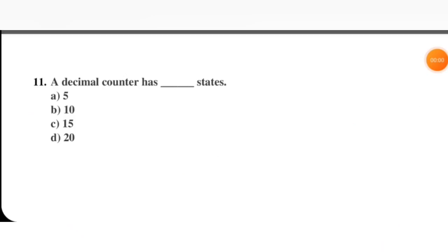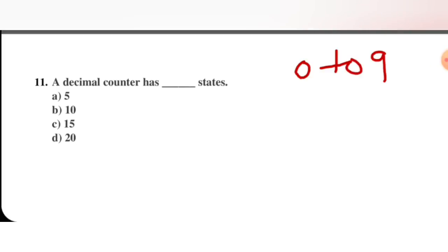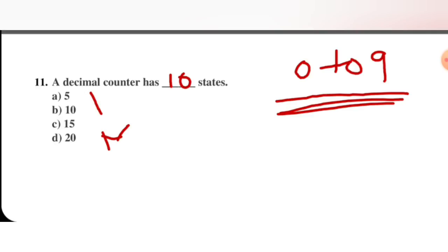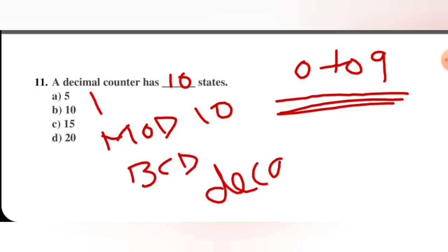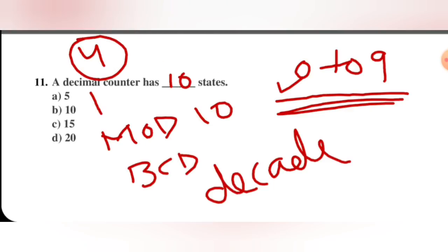Next question: a decimal counter has how many states? Decimal means 0 to 9, which gives 10 digits — 10 states. Note: this question could also be asked for mod 10, BCD, or decade counter, and the answer is always 10 states. The range is 0 to 9, and 4 flip-flops are required.